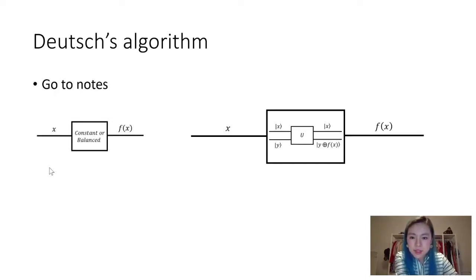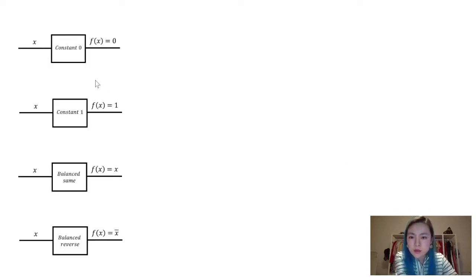Okay. So the Deutsch algorithm is trying to find out if the function f of x is constant or balanced. And in fact, in here, you would replace it with a quantum algorithm that has an oracle in it. So you need to build a oracle based on the different possibilities of f of x. Let's see step by step. You can construct these four possibilities. So classically, you have constant 0. So f of x is 0, constant 1, f of x is 1. If it's balanced but same, f of x would equal to x. But if it is balanced reverse, you will have a reverse of x. So these are the four probabilities.